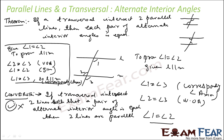Thus I have proved the statement is true — the converse is also true. Since the converse is also proved, it is also a theorem — a converse theorem. So we have two theorems for alternate interior angles: first, if two lines are parallel then the alternate interior angles are equal; second, if the alternate interior angles are equal then the two lines are parallel.